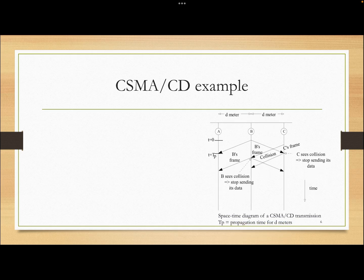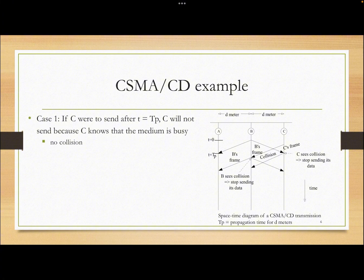Now let's look at the vulnerable time — the period during which collisions can occur. Because stations in a LAN are close together, they learn about each other's transmissions almost immediately. So the chance of collision is actually not large by listening to the medium first.